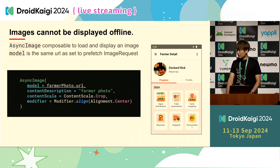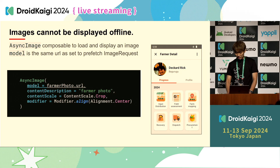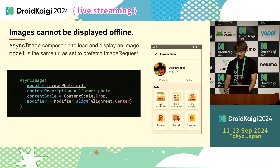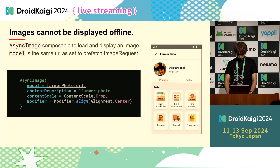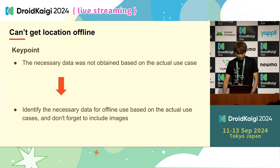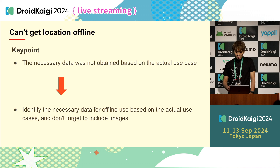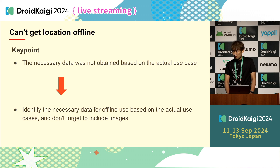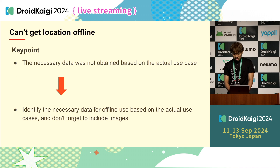This is the code to load and display the image. AsyncImage is a composable function that executes an image request asynchronously and renders the result. If you set the same URL as the prefetched image URL, the image will be loaded from the cache and successfully displayed even offline. The root problem was that necessary data was not obtained when online based on real use cases — image data was missing as data required for offline use. The important thing is that information required for offline use must be identified in light of actual use cases, and it's important to remember to consider data such as images in doing so.